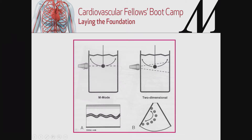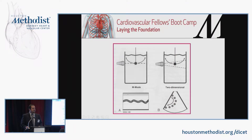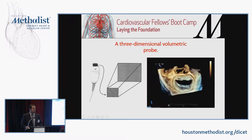Think of it this way: my ultrasound probe generates a single-dimensional image, with one crystal sending and receiving. All I'm interested in is the motion of a pendulum — I'll get a time-motion display of that pendulum as it swings back and forth. With a two-dimensional image, these are repetitive scan lines within a sector width, and I can see in real time the display of that pendulum swinging through the whole spectrum of the sector being imaged.